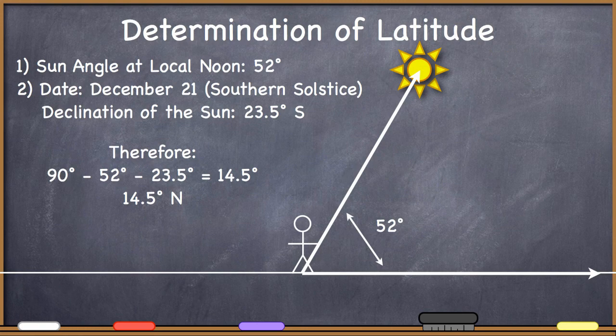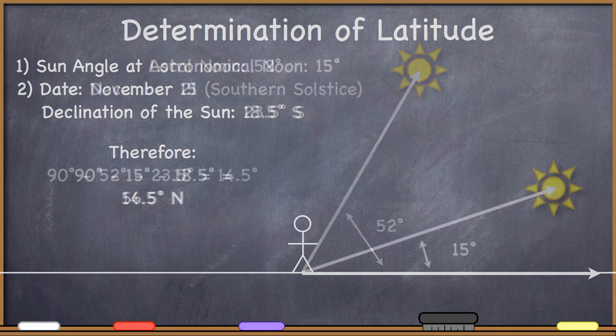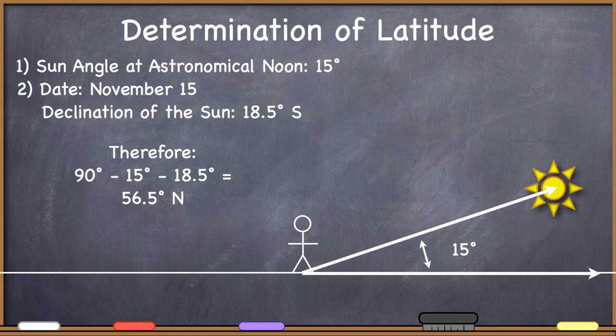Here is another example where we're trying to calculate our latitude on December 21st, the southern solstice. We find that at astronomical noon we have a Sun angle of 52 degrees. Therefore: 90 degrees minus 52 degrees minus 23.5 degrees — because the declination of the Sun is 23.5 degrees south, I'm using a negative value for the declination — equals positive 14.5 degrees. Therefore this person is standing at 14.5 degrees north.